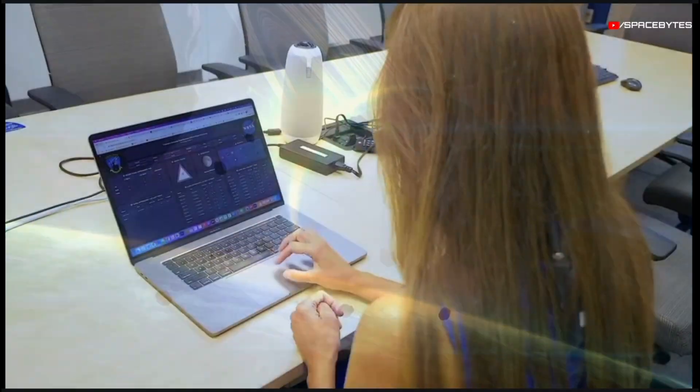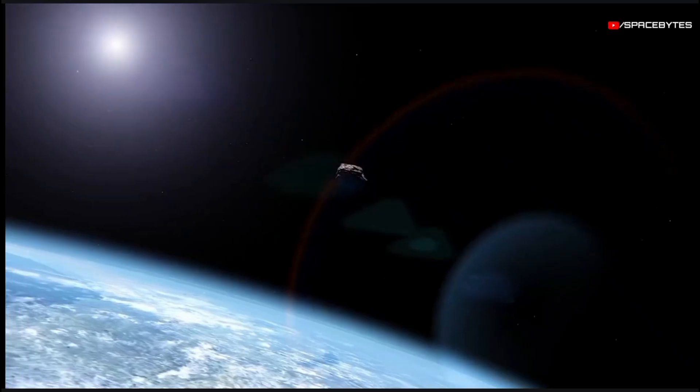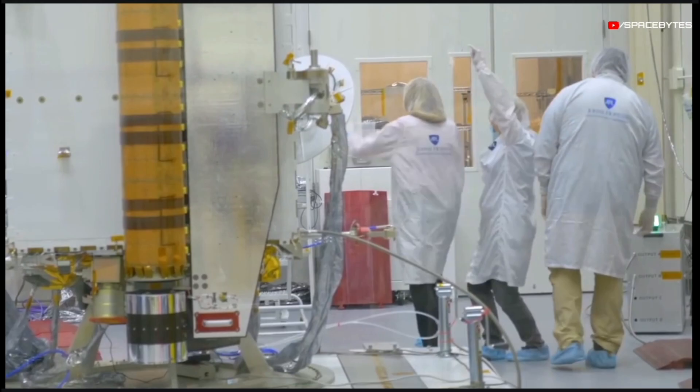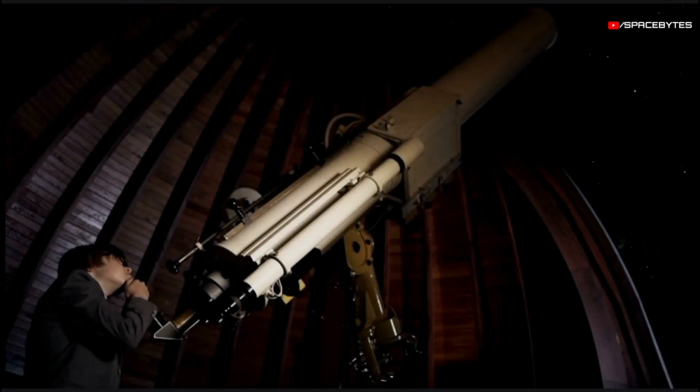NASA closely monitors the movements of these asteroids by studying data provided by various telescopes and observatories including PANSTARS, the Catalina Sky Survey, and the NEOWISE Telescope.